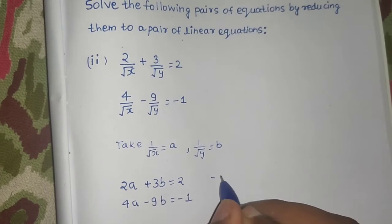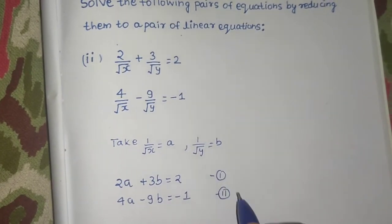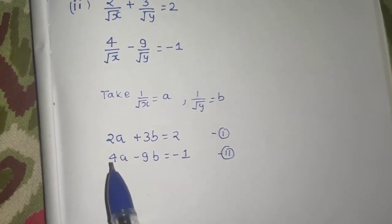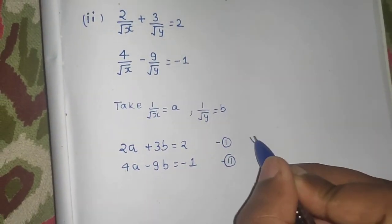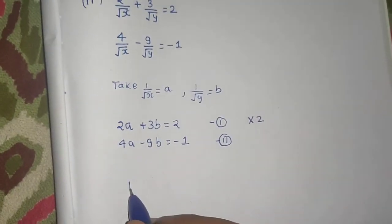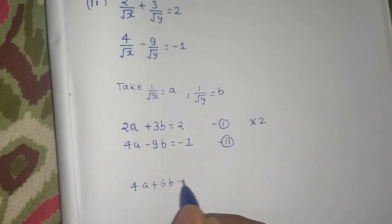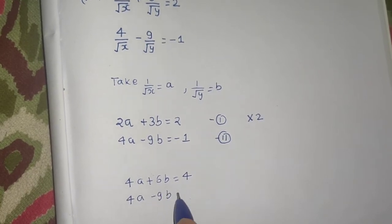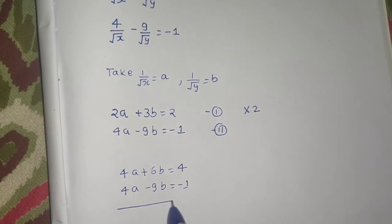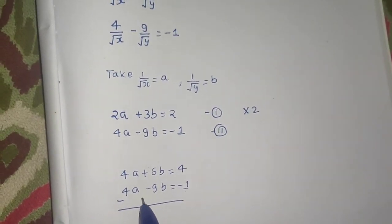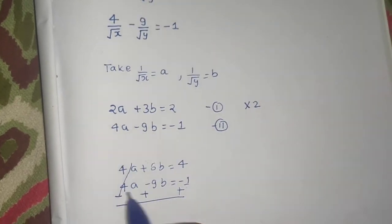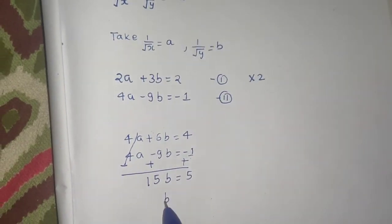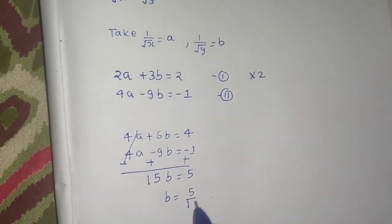Now apply the elimination method. To eliminate 'a', multiply the first equation by 2, so it becomes 4a + 6b = 4. The second equation remains 4a − 9b = −1. On subtracting, the 4a terms cancel, giving 6b + 9b = 5, so 15b = 5, which gives b = 5/15 = 1/3.